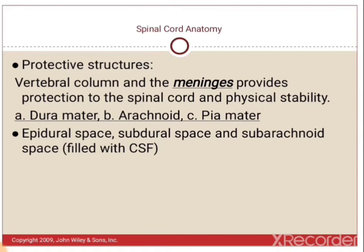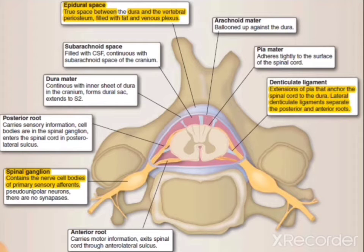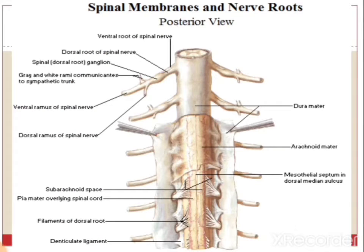The protective structures for the spinal cord are the three meninges: the outermost dura mater, then arachnoid, and the innermost pia mater. There is the epidural space lying outside the dura mater, the subdural space between dura mater and arachnoid, and the subarachnoid space between arachnoid and pia mater, which is filled with CSF. Here in the diagram we can see the three meninges — outermost dura mater, then arachnoid, then pia mater. The dura mater and arachnoid can be reflected to reveal the pia mater.